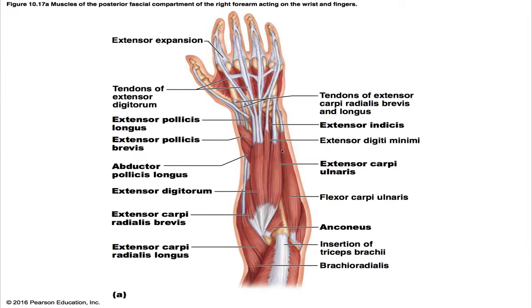The extensor carpi ulnaris is a long, slender muscle and the most medial of the superficial posterior muscles. Its origin is the lateral epicondyle of the humerus and the posterior border of the ulna. Its insertion is the base of the fifth metacarpal. Its action is to extend the wrist in conjunction with the extensor carpi radialis and adduct the wrist in conjunction with the flexor carpi ulnaris. It is innervated by the posterior interosseous nerve.